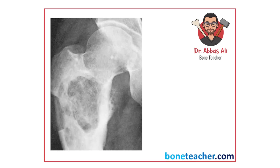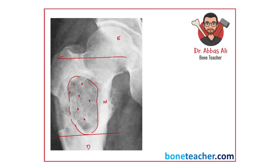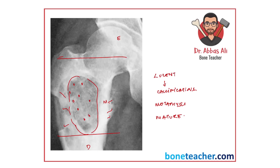Now this image shows the proximal femur. The growth plate is fused — a mature skeleton. There is a lucent lesion in the metaphysis with stippled or punctate calcification, and it looks very aggressive. So: lucent background with stippled or punctate calcification in the metaphysis of a mature skeleton — looks very aggressive. The keywords are metaphysial, mature skeleton, lucent background with calcifications.